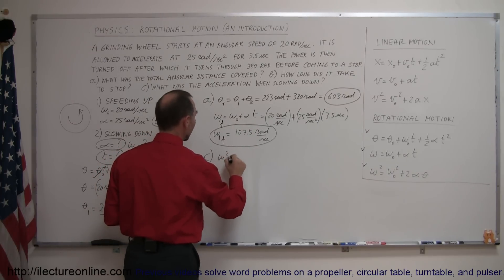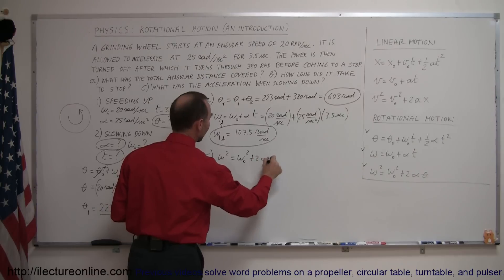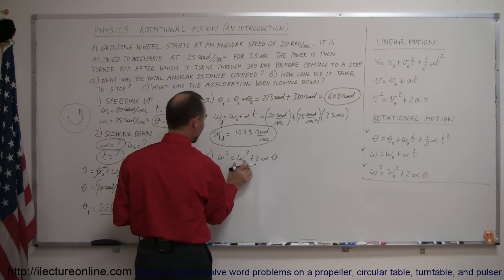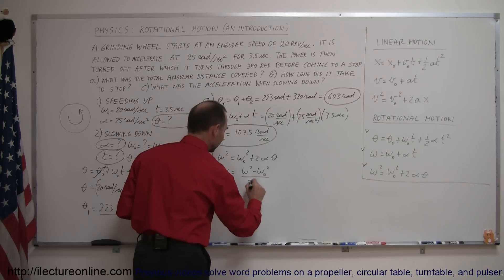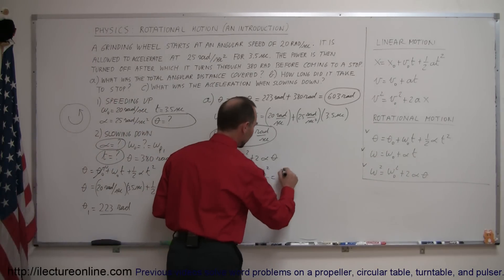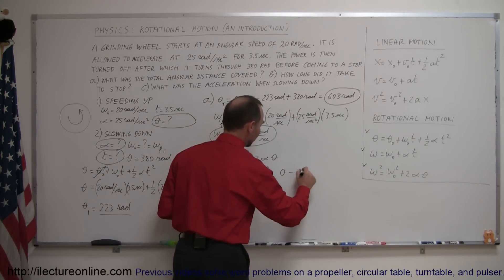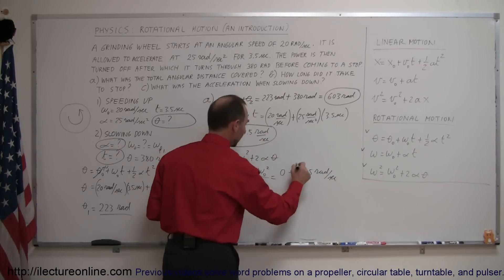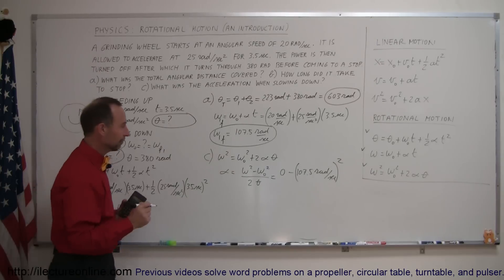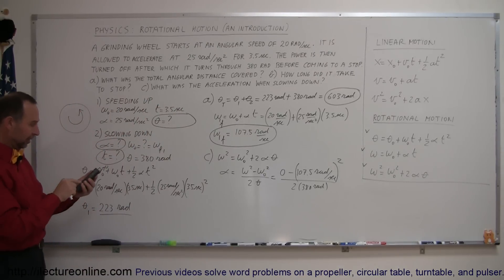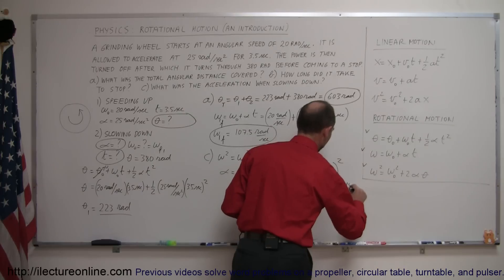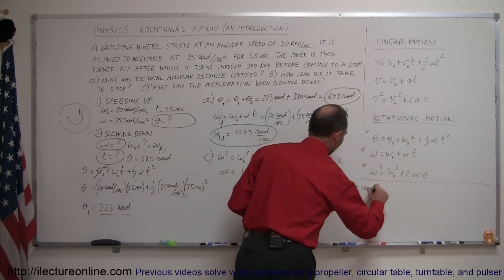For part C, using omega squared equals omega-initial squared plus 2 alpha theta, we solve for alpha: alpha equals (omega squared minus omega-initial squared) divided by 2 theta. Plugging in: final omega is zero, initial omega is 107.5 radians per second squared, divided by 2 times 380 radians. Squaring 107.5, dividing by 2, then by 380 gives 15.2 — and it's negative because it's slowing down. So alpha equals negative 15.2 radians per second squared. That's the answer to part C.